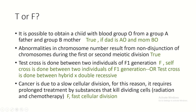It is possible to obtain a child with blood group O from a group A father and group B mother - if both parents carry the O allele (AO and BO). Abnormalities in chromosome number result from non-disjunction during the first or second meiotic division - true. Test cross is done between a hybrid or heterozygous individual and a double recessive individual, not between two F1 individuals.